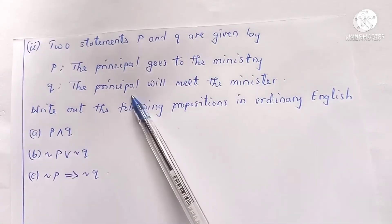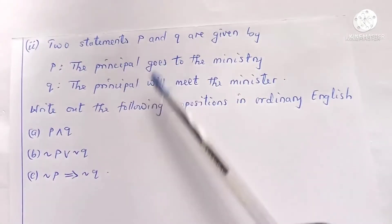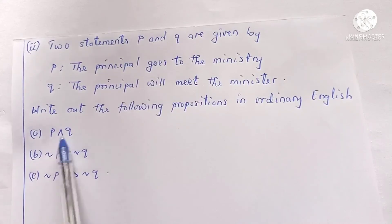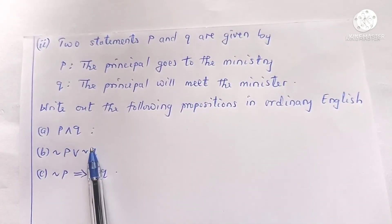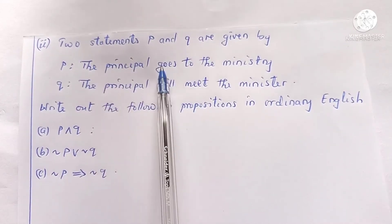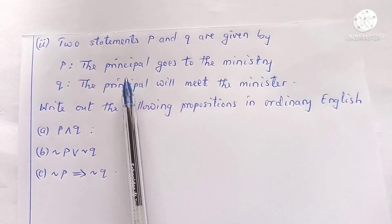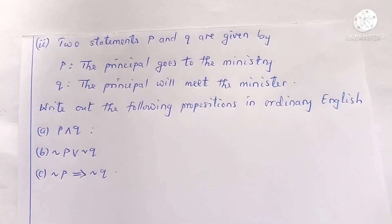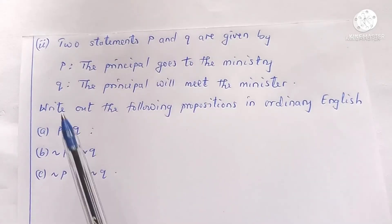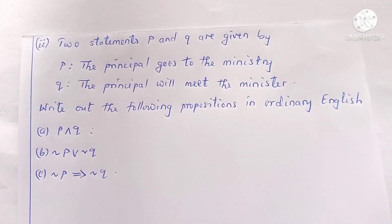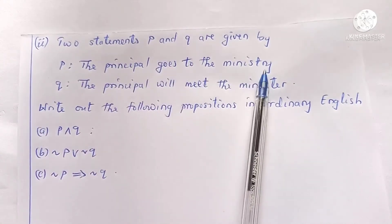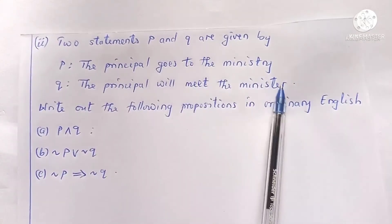For the first proposition, we combine the two statements using the connective 'and.' So p and q is the statement: 'the principal goes to the ministry and the principal will meet the minister.' If the principal is male we can say: 'the principal goes to the ministry and he will meet the minister.' If female: 'the principal goes to the ministry and she will meet the minister.'